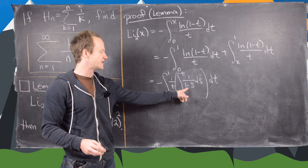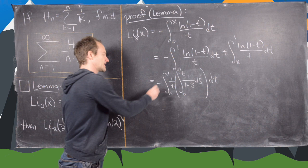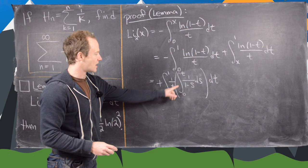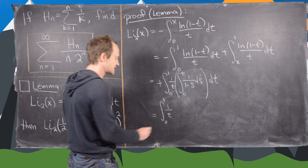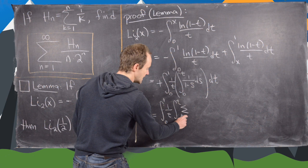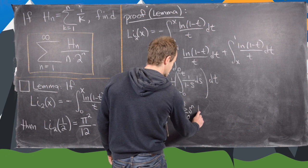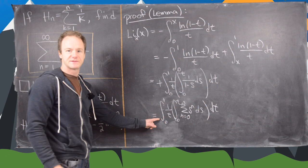Note that the antiderivative of 1/(1−s) gives negative ln(1−t), but that cancels the minus sign. Working down on this term, we have the integral from 0 to 1 of 1/t times the integral from 0 to t of the sum n=0 to infinity of s^n ds, then dt.